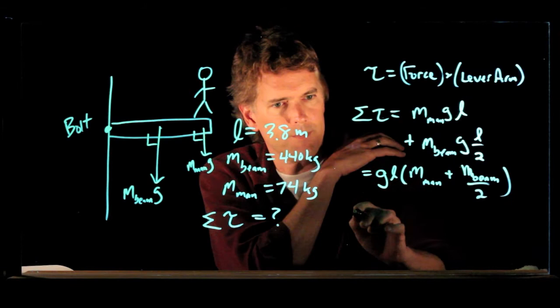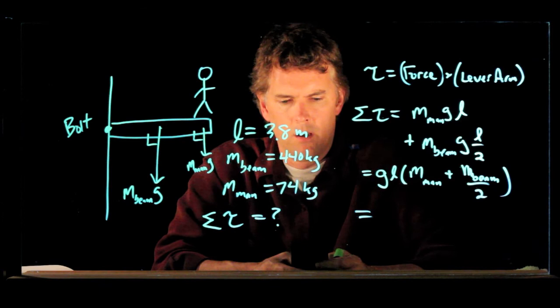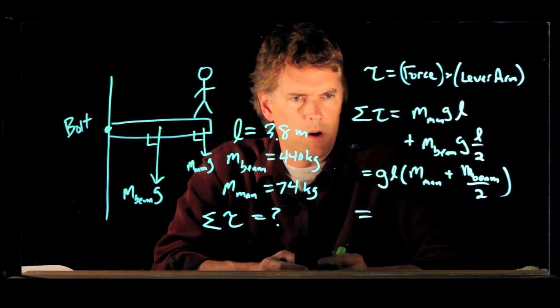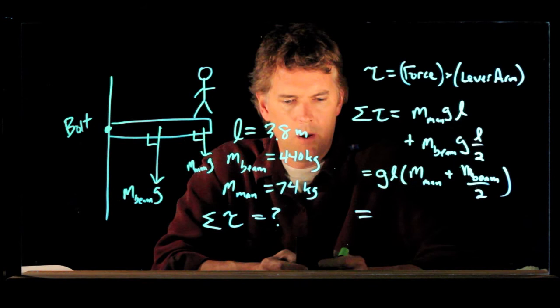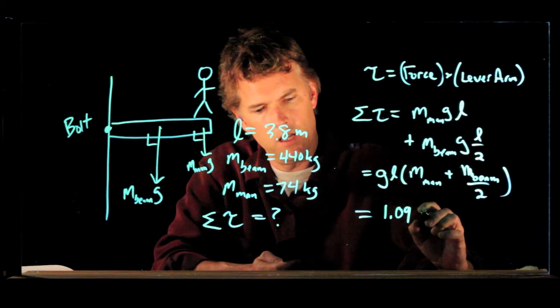And now we have all those numbers, so we can just plug them in. M for the beam was 440. Divide that by 2, we get 220. We're going to add the mass of the man, which is 74. And now we're going to multiply that whole thing by the length, which we said was 3.8, and multiply by gravity, which is 9.8. And we get 1.09 times 10 to the 4.